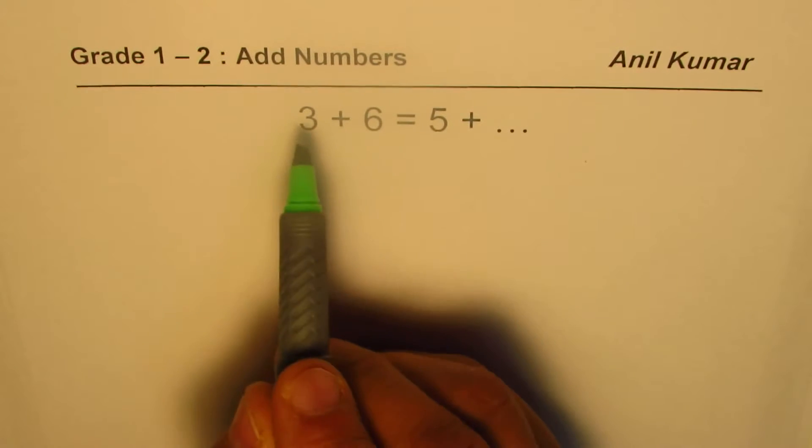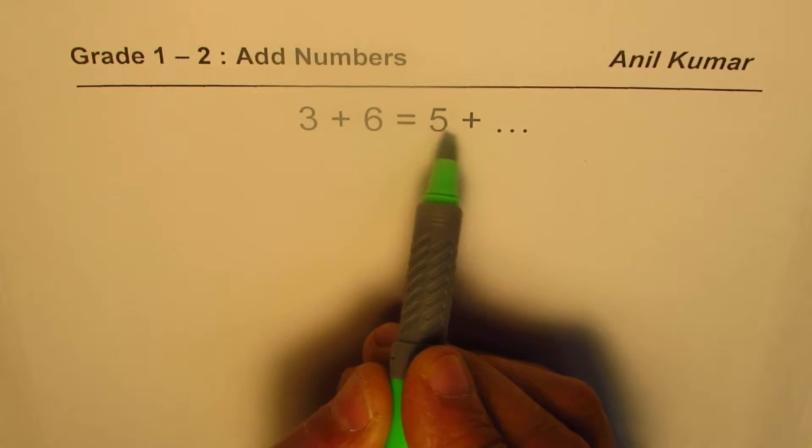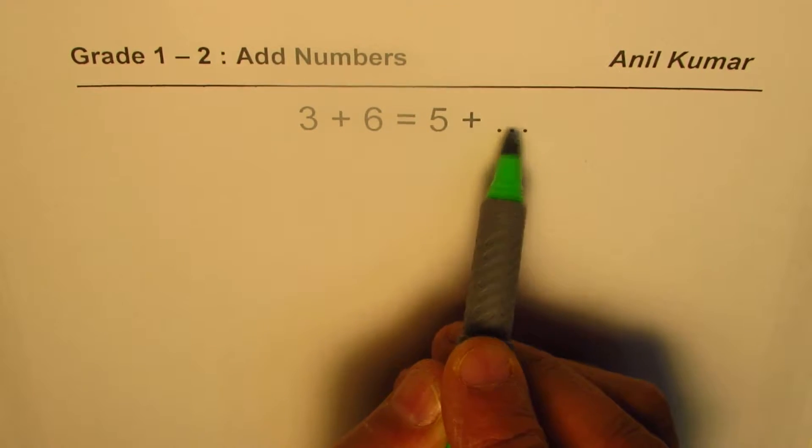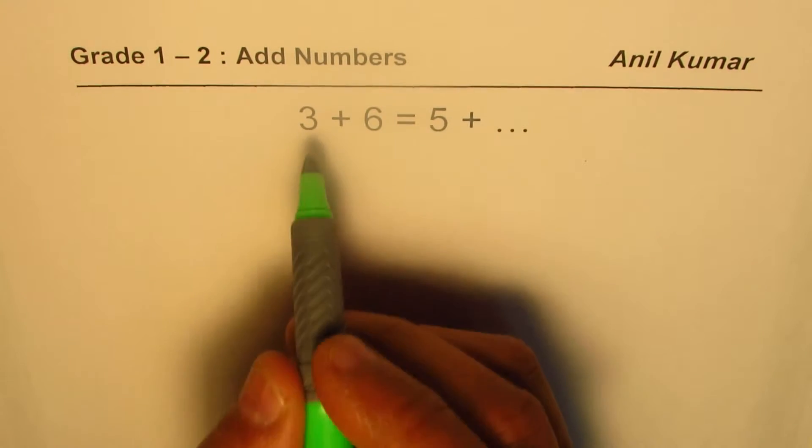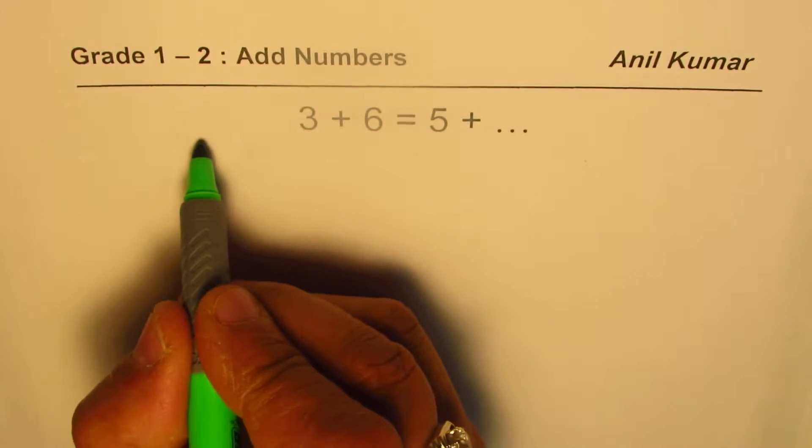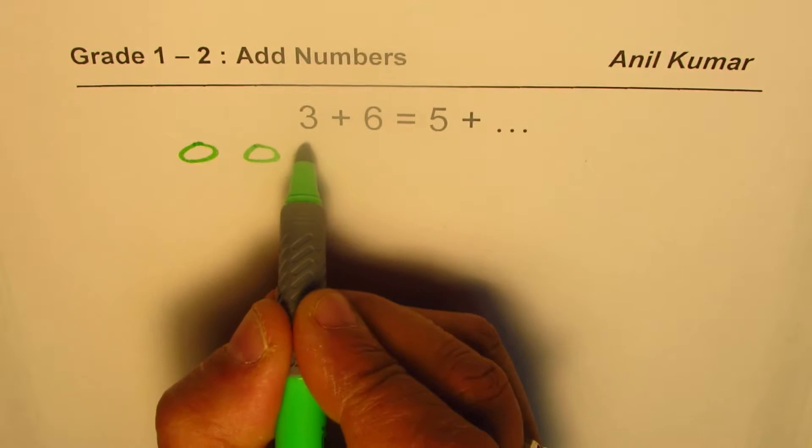Let us see how to do it. 3 + 6 is equal to 5 + what number. To begin with, let me draw three circles: one, two, and three.